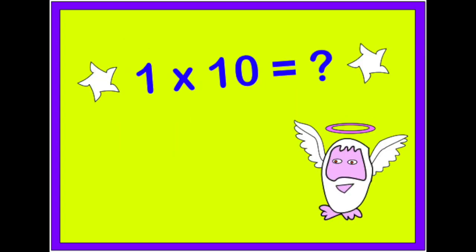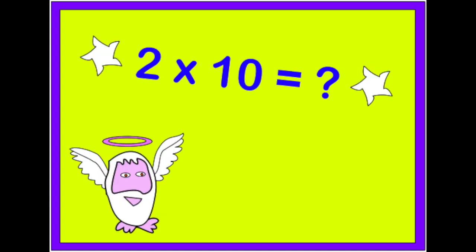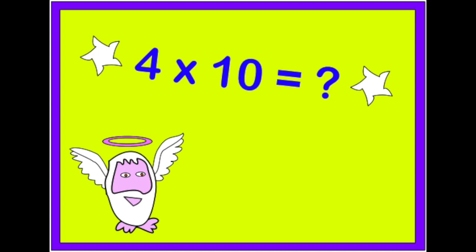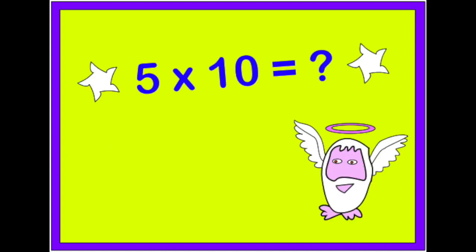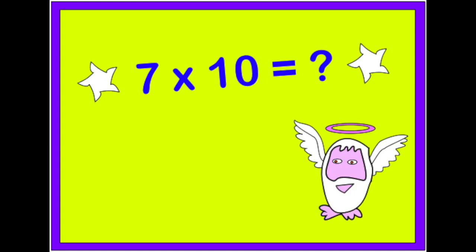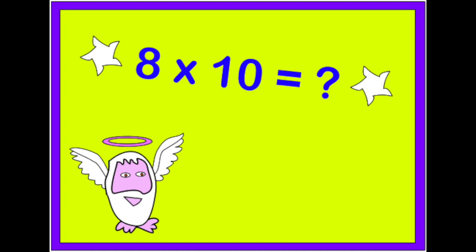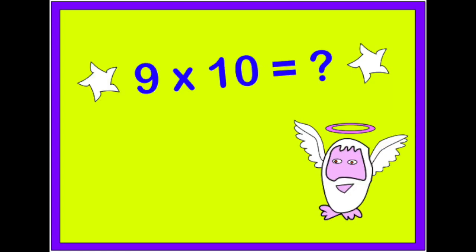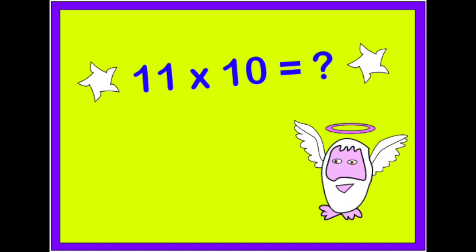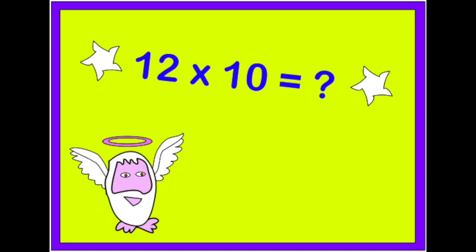1 x 10 is 10. 2 x 10 is 20. 3 times 10 is 30. 4 times 10 is 40. 5 times 10 is 50. 6 times 10 is 60. 7 times 10 is 70. 8 times 10 is 80. 9 times 10 is 90. 10 times 10 is 100. 11 times 10 is 110. 12 times 10 is 120.